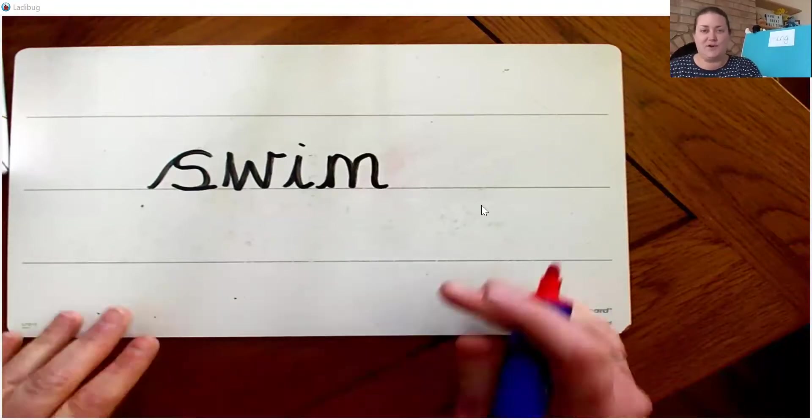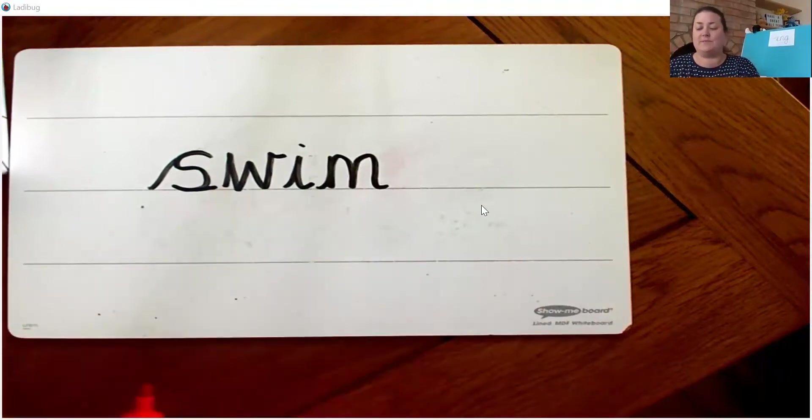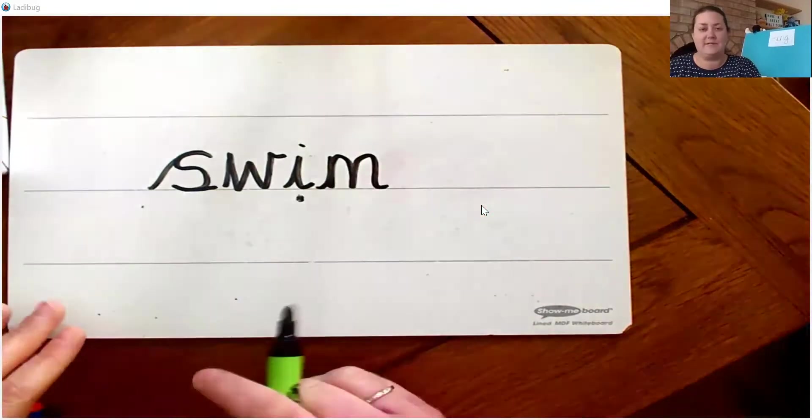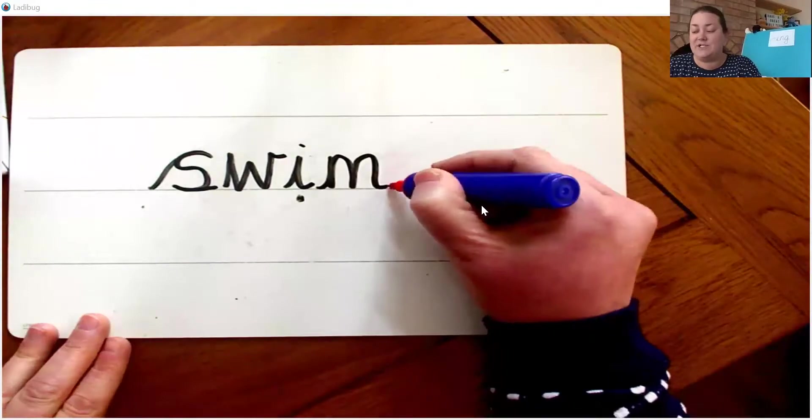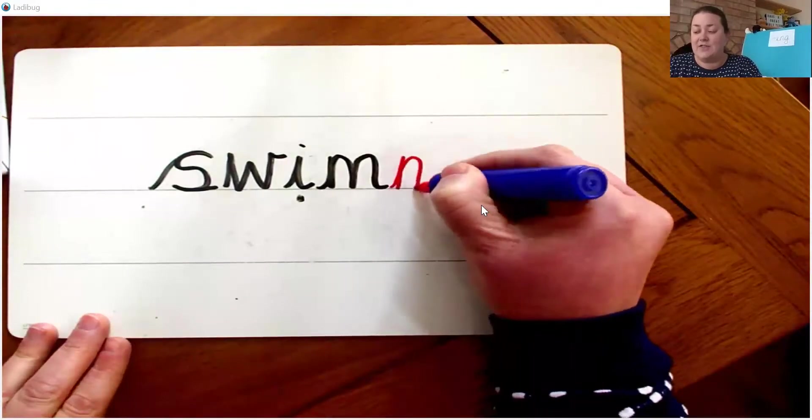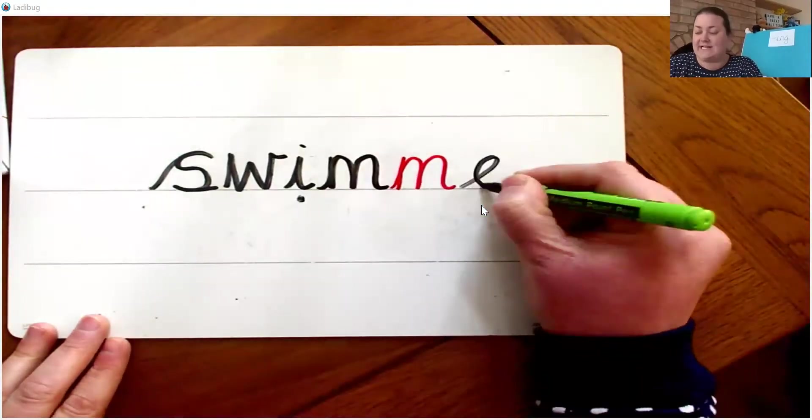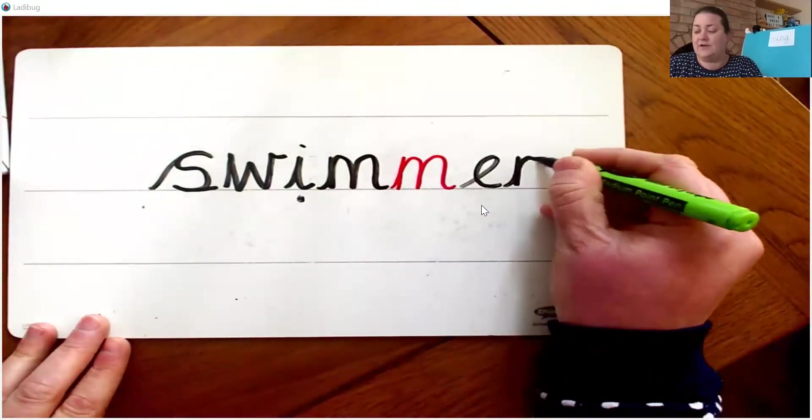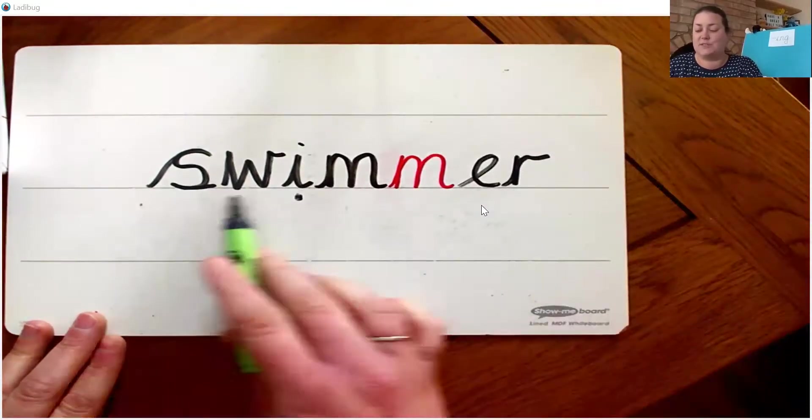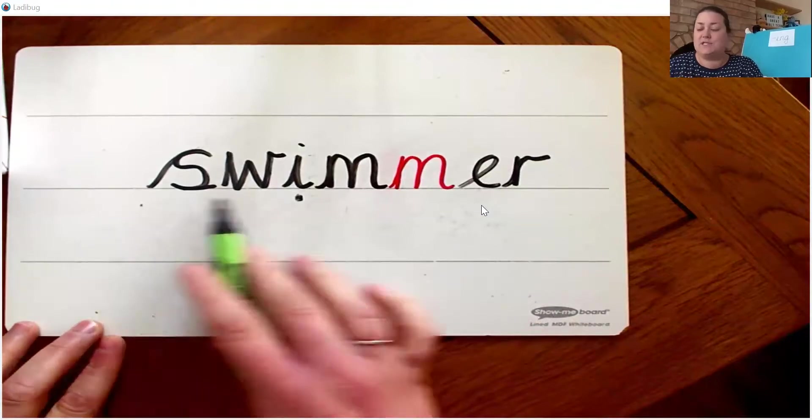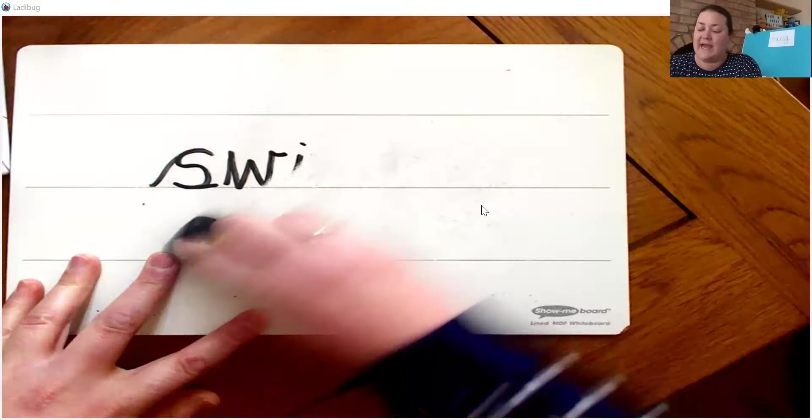Did you follow the rule? So it's got that short vowel sound, it's followed by that consonant. So we need to add another m, another m, and then we need to add our suffix er. So we've changed the word swim into the word swimmer. Well done you if you gave that one a go.